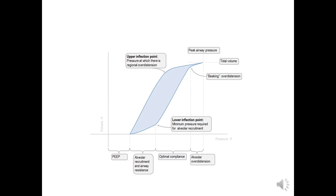If a beaking appearance is seen on the pressure-volume loop, it means there is over-distension. In such a condition we need to reduce the volume to prevent over-distension-related lung injury.